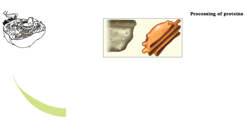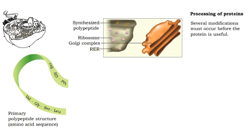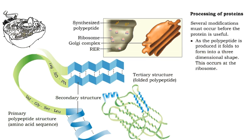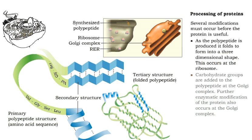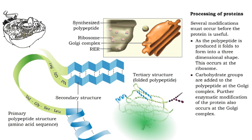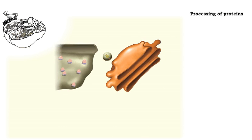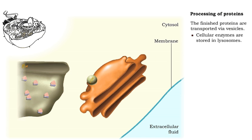A polypeptide must be modified before it can become a useful protein. As the polypeptide is translated at the ribosome, it folds into a three-dimensional form. After the polypeptide is released from the ribosome, it is moved to the Golgi complex, where carbohydrate groups are added. Enzymes in the Golgi complex further modify the protein. The finished proteins are then distributed by vesicles.